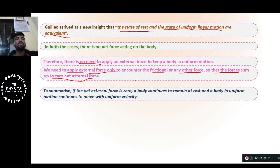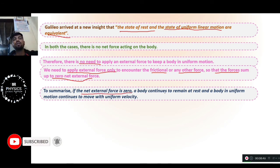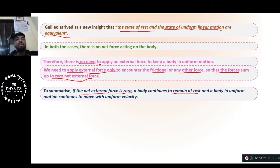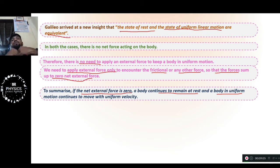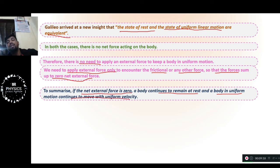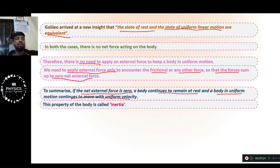We can say that if the net external force is zero, a body continues to remain at rest. To move it from rest, we compulsorily have to apply some force. Similarly, when we talk about a body in uniform motion, to stop it we have to apply force — like applying brakes. The body continues to move with uniform velocity unless a force acts on it.